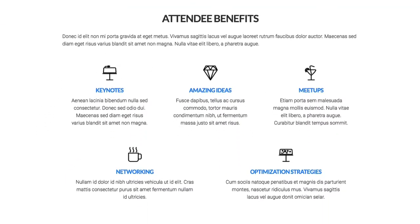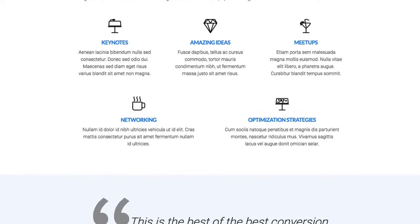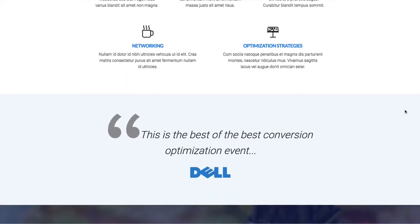Going down into the benefits section, we've used the blue color inside the titles of each benefit point. You can swap out the icons for your own or just change the text to match the icon — any benefits attendees will get from coming to your event. It's very clean and easy to read.